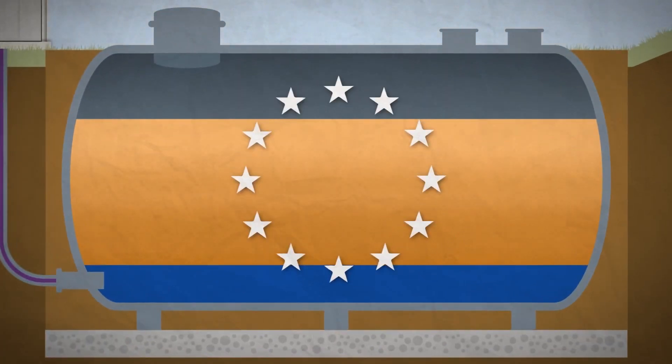To meet European fuel standards, diesel must contain no more than 200 parts per million of water, and water is a primary catalyst allowing the formation of diesel bug.